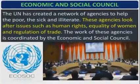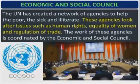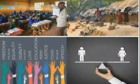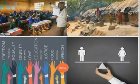Economic and Social Council. The UN has created a network of agencies to help the poor, the sick, and the illiterate. These agencies look after issues such as human rights, equality of women, and regulation of trade. The work of these agencies is coordinated by the Economic and Social Council. It helps in providing education to the illiterate, support to the poor, and freedom, peace, equality, and dignity to women.